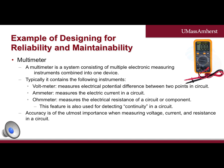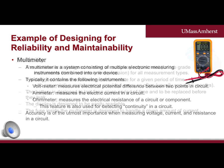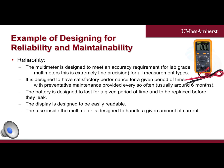Accuracy is of the utmost importance when measuring voltage, current, and resistance in a circuit. Incorrect data can lead to overdriving devices, not applying correct voltage or current to a device, or other issues that can be dangerous for the device and the operator. Multimeters are designed to meet satisfactory accuracy requirements for all measurement types and are designed to have satisfactory accuracy performance for a given period of time, with preventative maintenance every so often — usually calibrating the accuracy every six months.